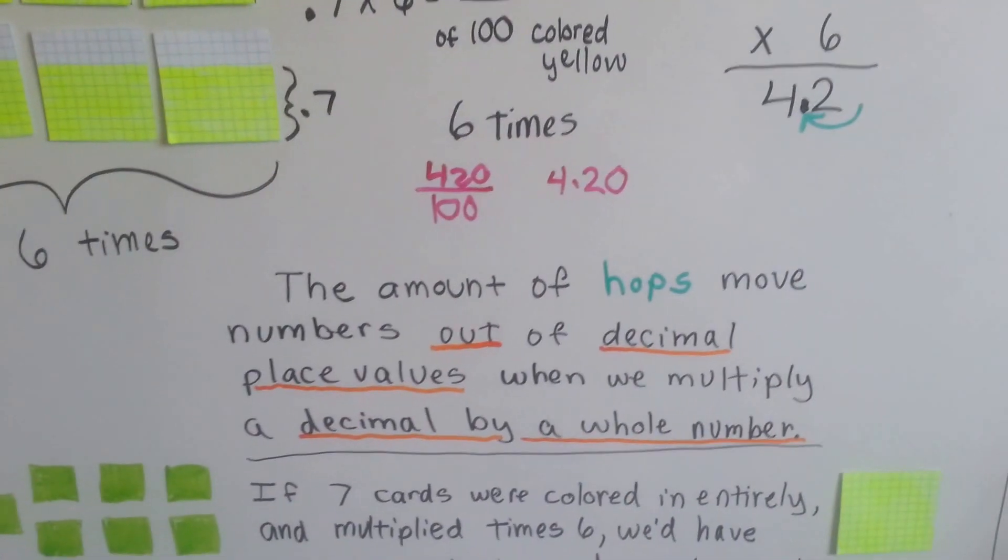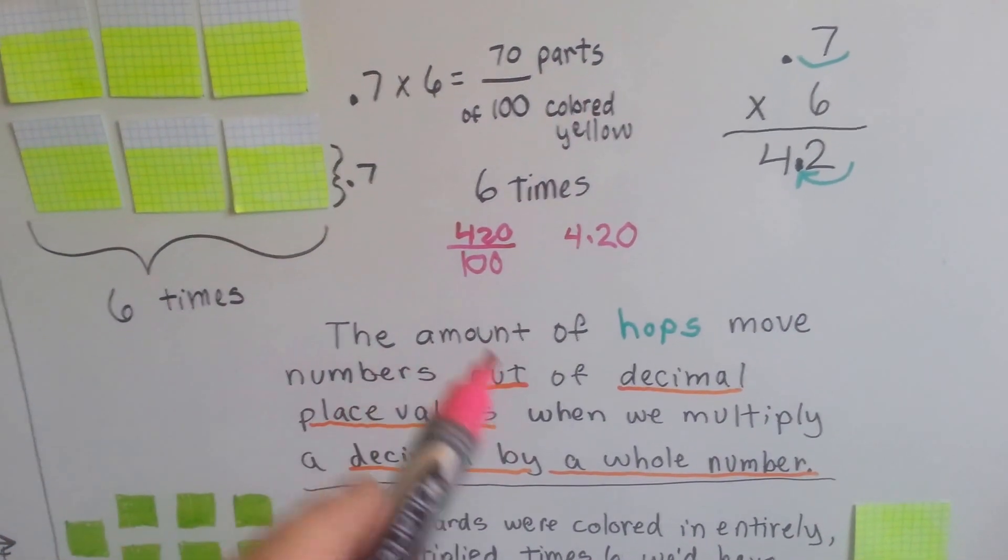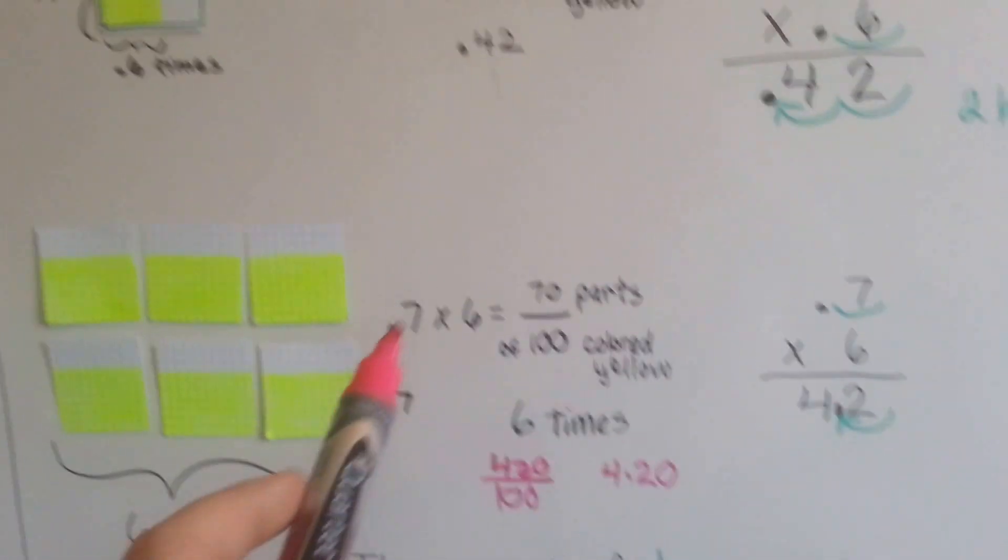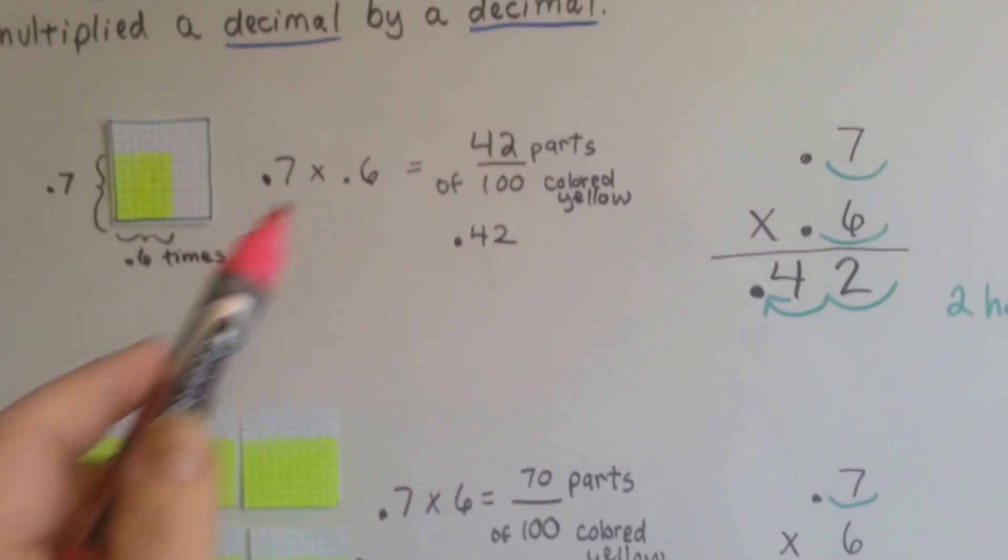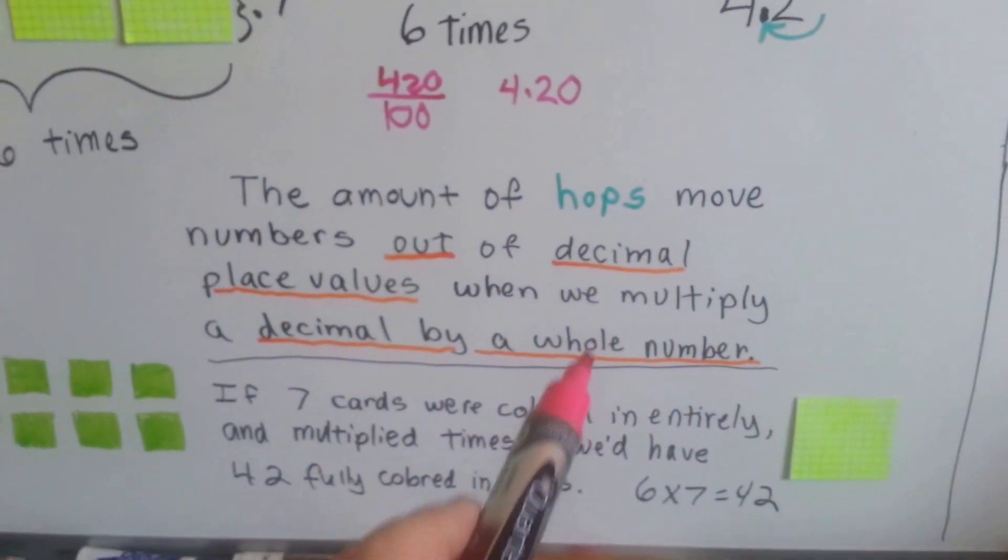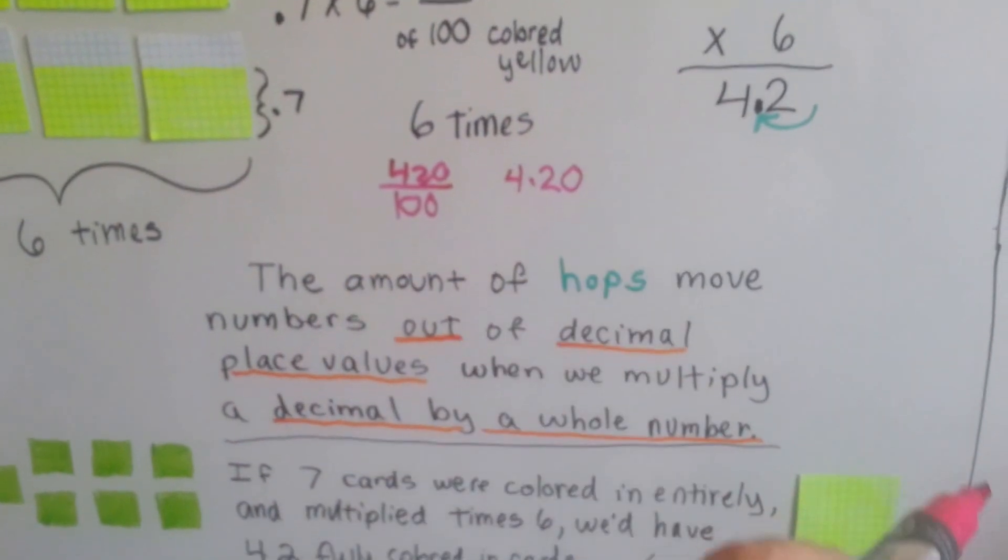The amount of hops moves the numbers out of the decimal place values when we multiply a decimal by a whole number. It's moving it out of the decimal place value. When we multiplied it by a decimal, it moved it into the decimal place value. So the whole number is helping it move towards the whole numbers. The decimal helps it move more into the decimals.